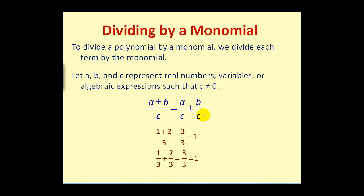Now, this becomes pretty clear when we take a look at a specific example with values for a, b, and c. So for example, if we have one plus two over three, we know we can add one plus two to get three, and of course, three over three is equal to one.